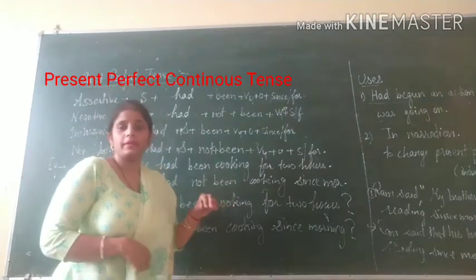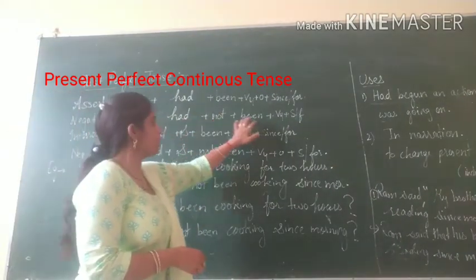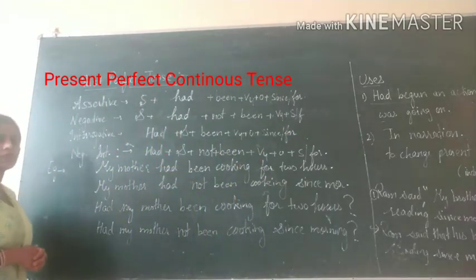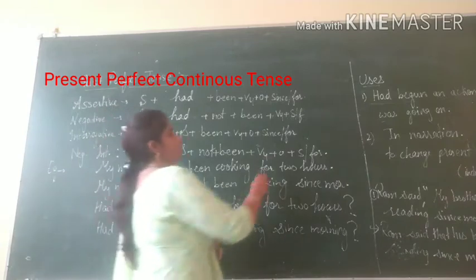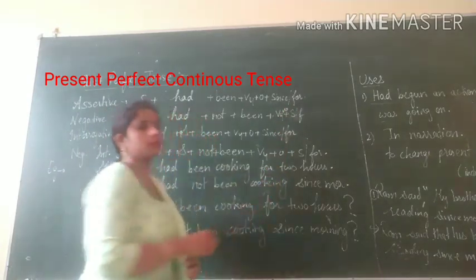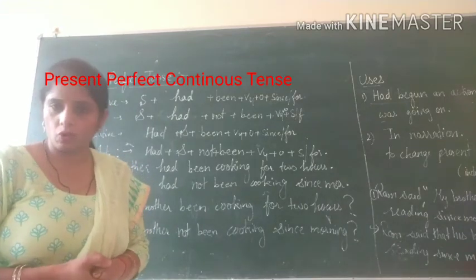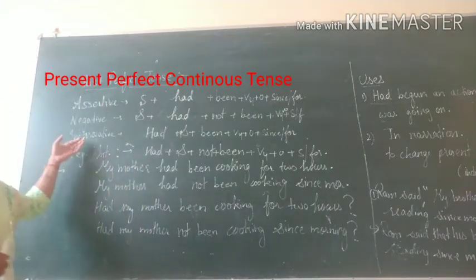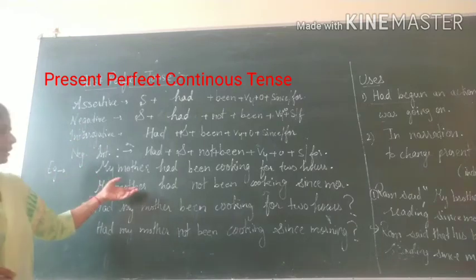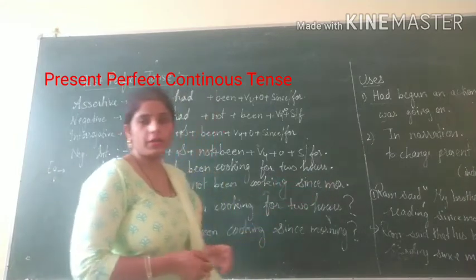To make a negative sentence: Subject + had + not + been + present participle + object + since/for. You can also make a sentence without an object. For example: 'My mother had not been cooking since morning.'